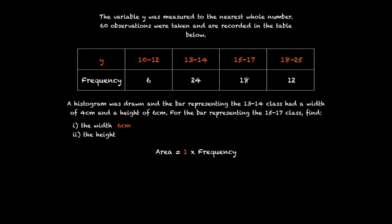Let's call the height of our bar h. And we know the width of the bar is 6. And so the area is 6h. And 6h is equal to the frequency. And we know or told that's 18. So 6h equals 18. And therefore the height is equal to 3cm.